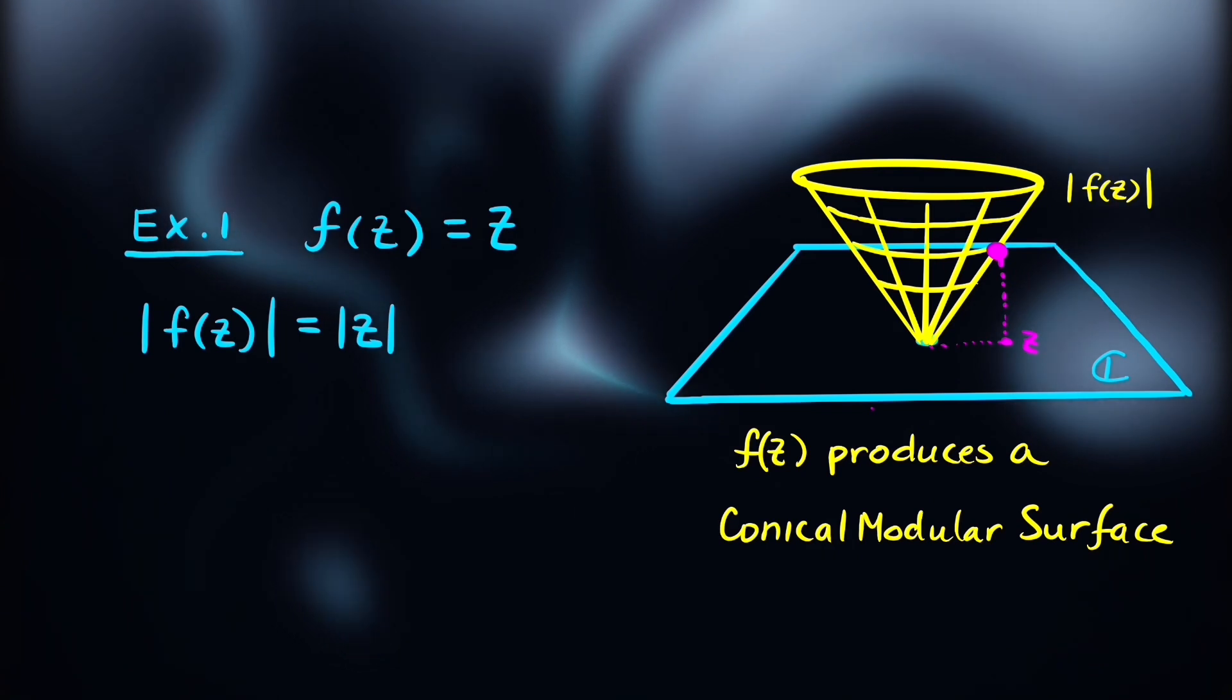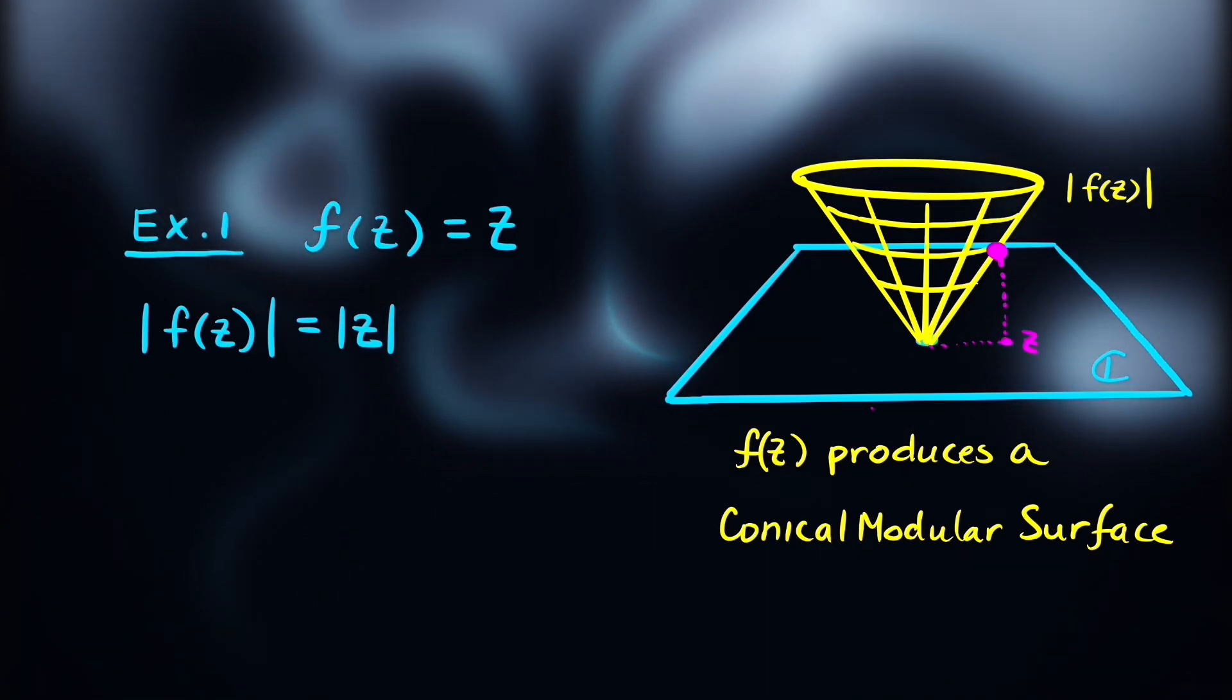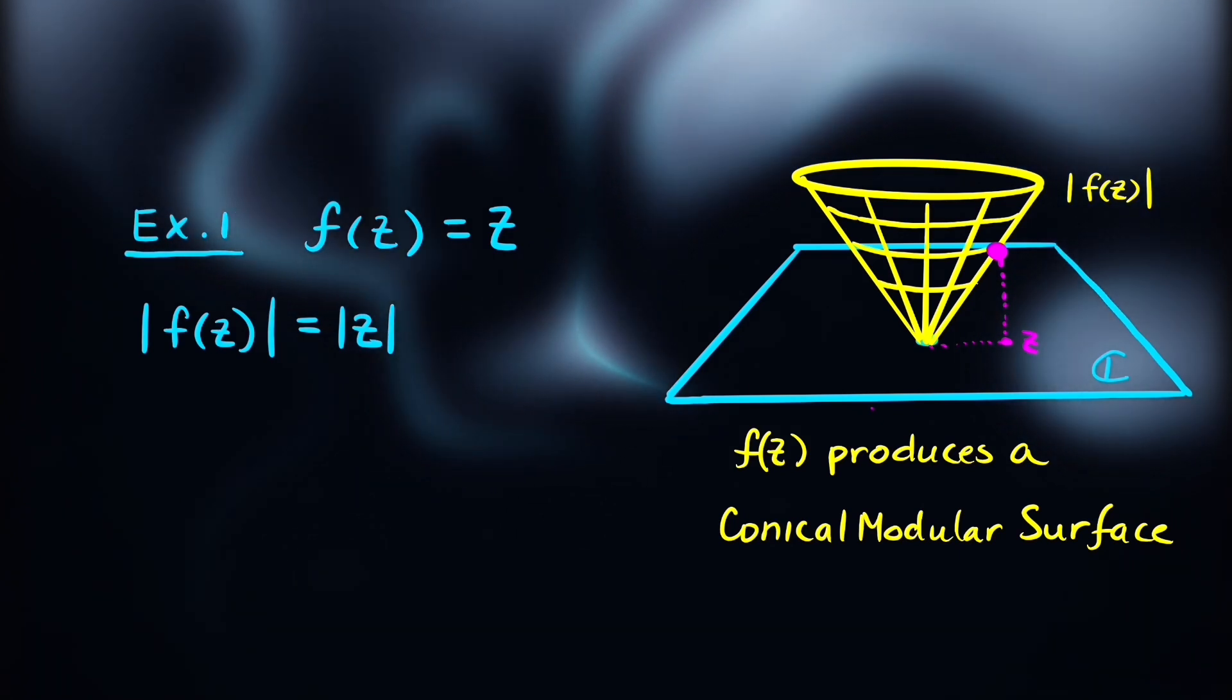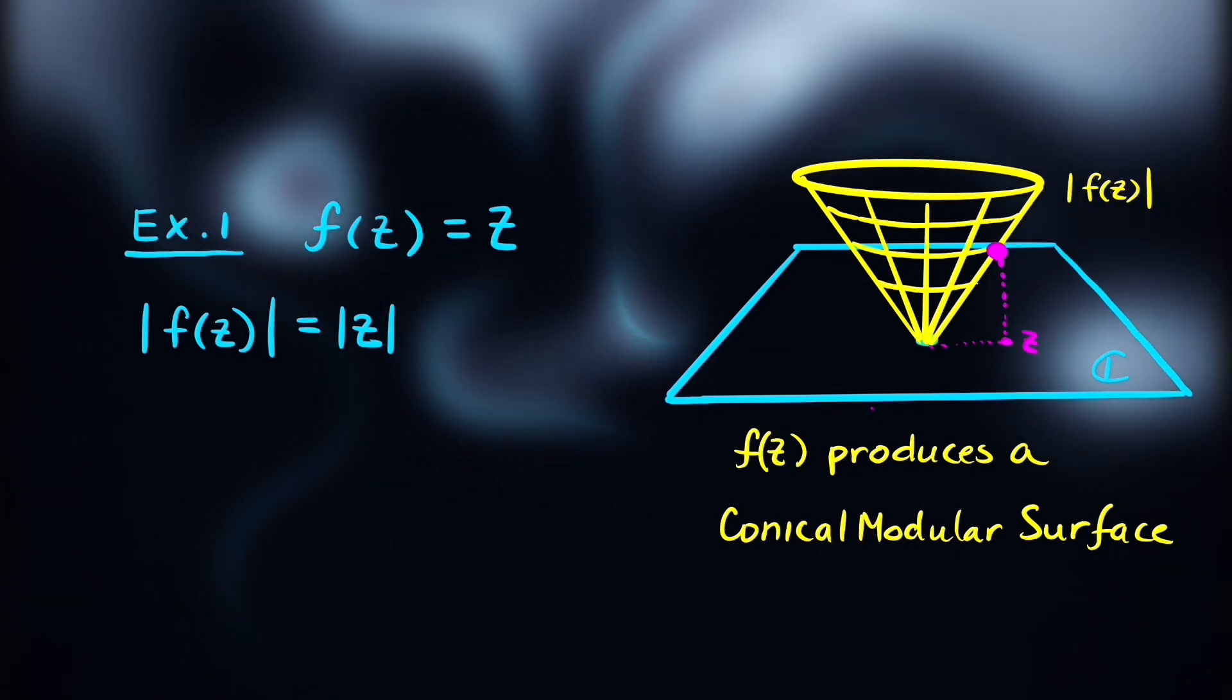One example is f equals z. Since z grows linearly, we produce a conical modulus surface stemming from the origin of the complex plane.